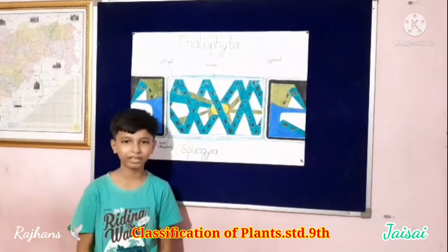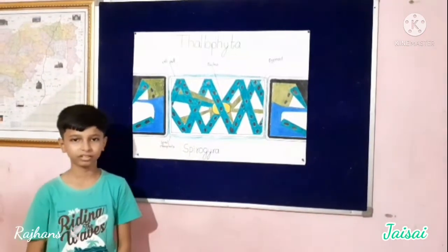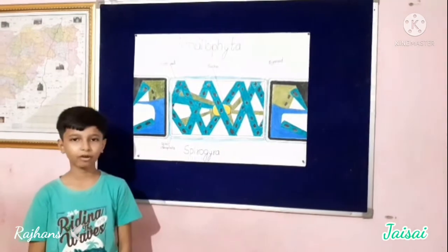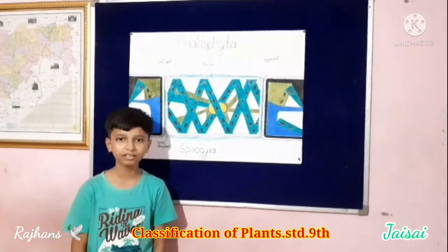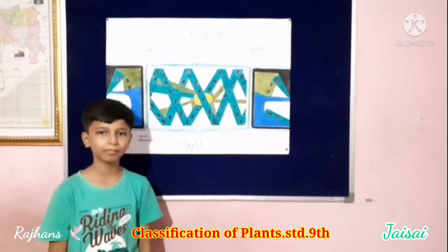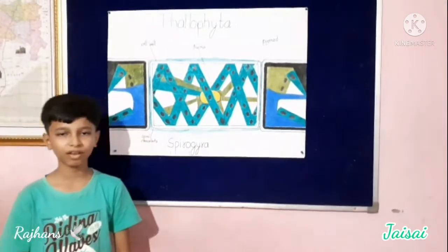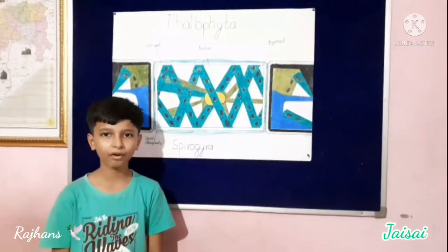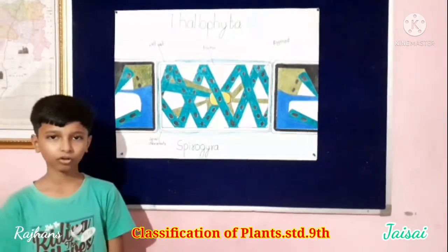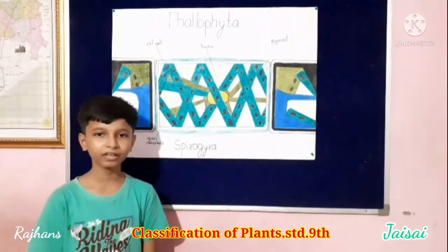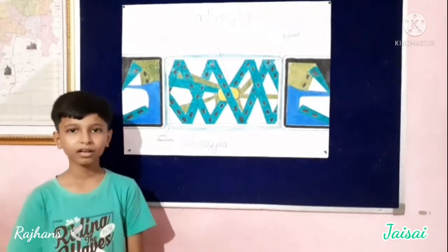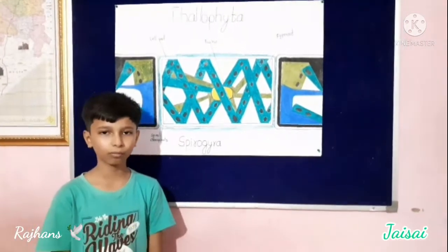These plants grow mainly in water. The group of plants do not have specific parts like stem, root, leaf, or flower. They have autotrophic nutrition and they do not have chlorophyll.